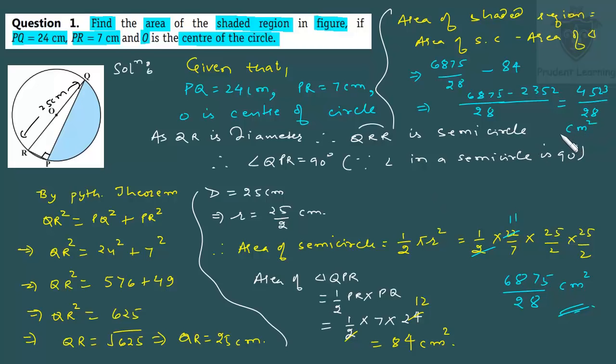If you check the NCERT book, the answer given at the back of the book is this same value. That's why I'm not solving it further. So finally, we have the area of the shaded region as 4523 upon 28 cm squared. So this completes our solution. Let us see the second question.